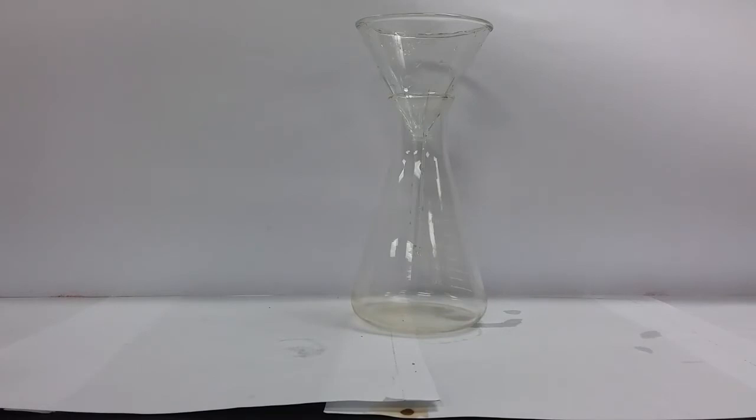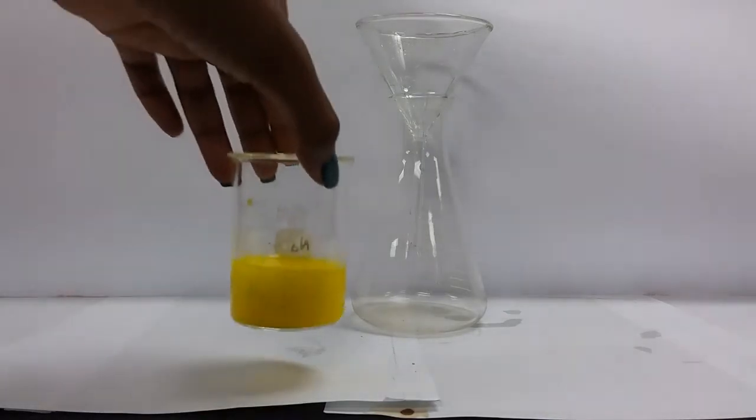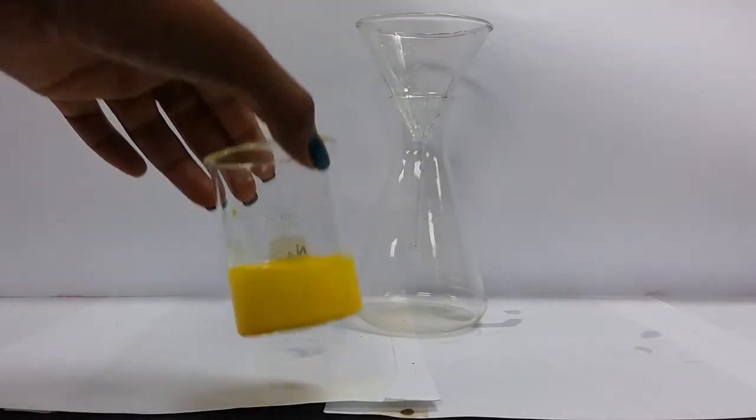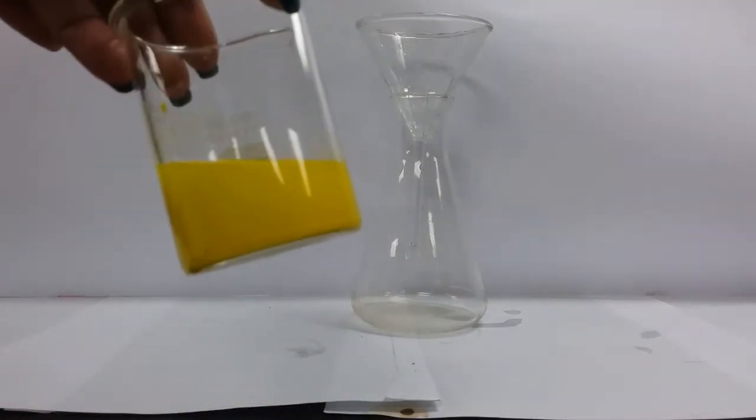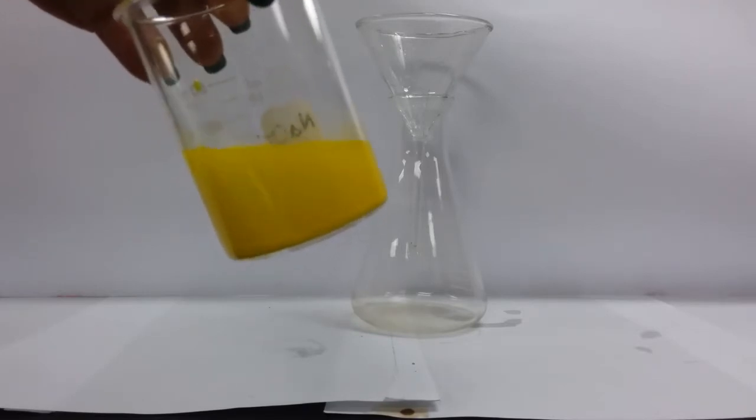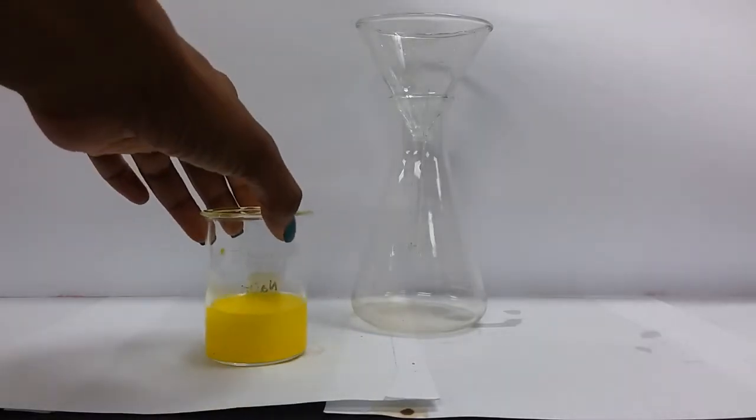So the next thing we do is filter our mixture to separate our solid precipitate from the filtrate, which it is currently mixed in with. And if you can see, or maybe not in the camera, this has already started to settle out.